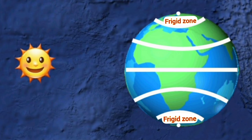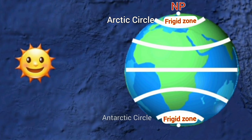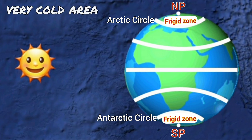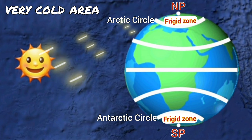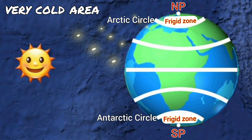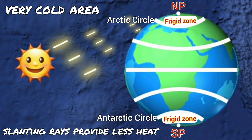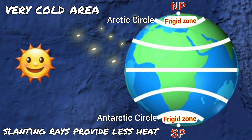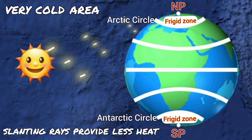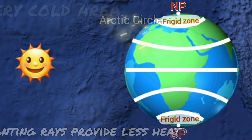The third zone is known as the Frigid Zone. The areas lying between the Arctic Circle and the north pole in the northern hemisphere, and the Antarctic Circle and the south pole in the southern hemisphere, are very cold. Here the sun does not rise much above the horizon, so its rays are always slanting and provide less heat. These are therefore called Frigid Zones. So that was all about the heat zones of the earth.